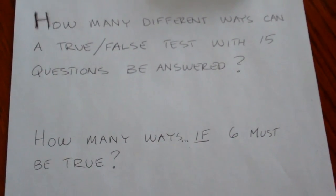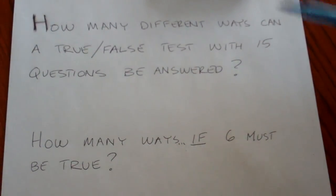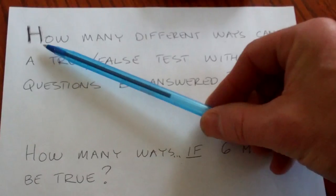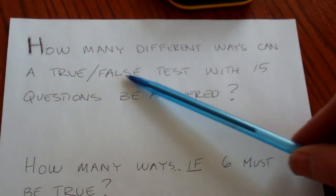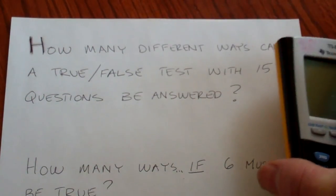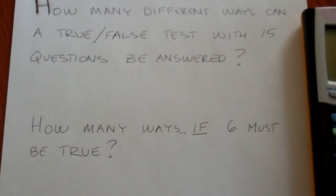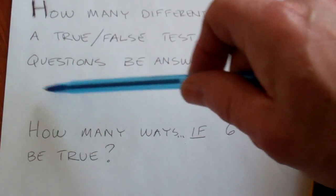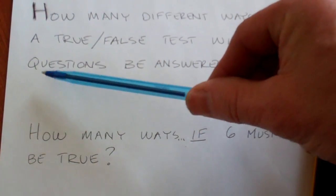We have a very quick video here basically showing you how to use our calculator to solve some problems that are very common to probability. This is just a counting question: how many different ways can a true-false test be asked with 15 questions? The answer key could consist of a combination of T's and F's. Using the fill-in-the-blank method, there would be 15 blanks, each with two different possibilities — true or false.